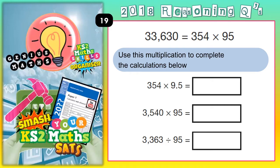Welcome Satsbusters to question 19. We've been given a calculation: 33,630 is equal to 354 times 95. They've written it the wrong way round — this really is the question and this really is the answer. It says use this multiplication to complete the calculations below.